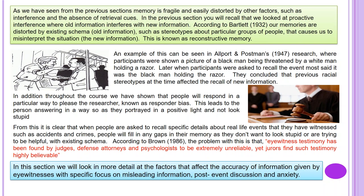An example of this can be seen in Allport and Postman's 1947 research, where participants were shown a picture of a black man being threatened by a white man holding a razor. Later, when participants were asked to recall the event, most said it was the black man holding the razor. They concluded that previous racial stereotypes at the time affected the recall of the new information. In addition, throughout the course we have shown that people respond in a particular way to please the researcher, known as responder bias.